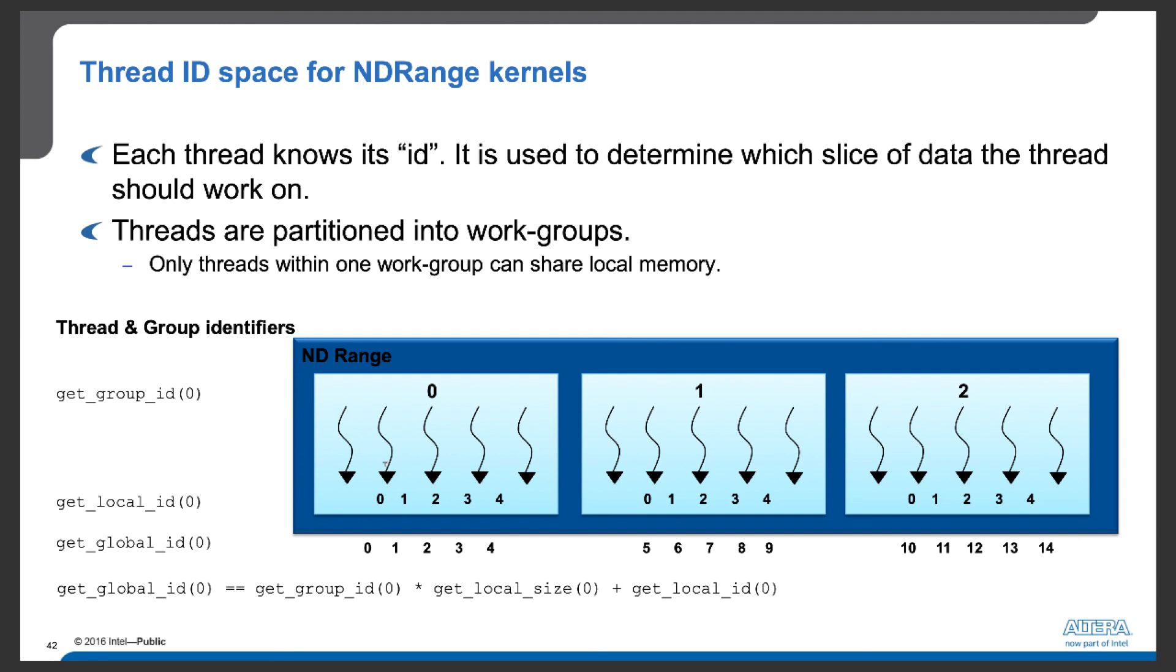We identify these threads using IDs. And we have local ID and global ID. If we look at global ID, the identifiers start from 0, and the next thread is 1, and so on, and up to 14 because we have 15 threads.